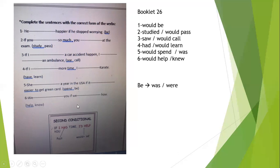So to summarize: with 'if' we put verb two, and the next part we put 'would' and verb one. That's it for the second conditional. If you have any questions, ask me. Enjoy your new weekend!